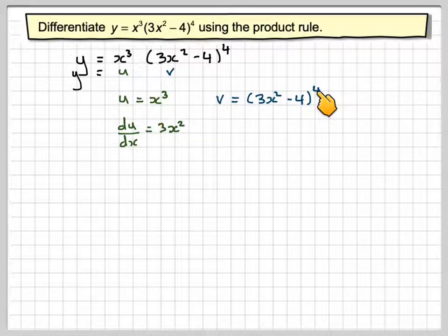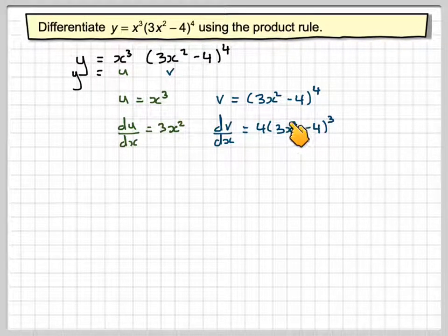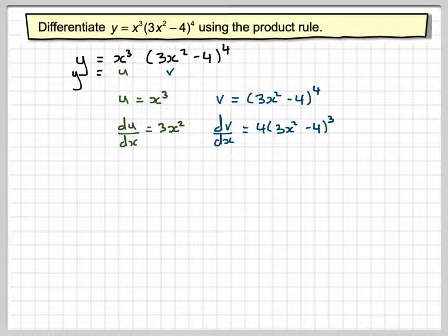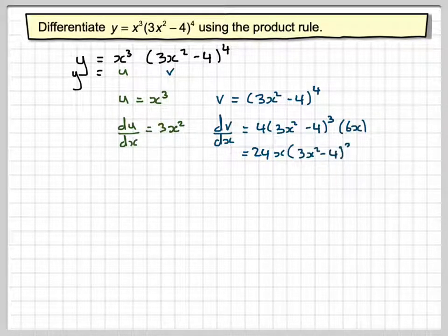Now you differentiate this using the chain rule. So it's going to be 4 times 3x squared minus 4 to the power of 3. Differentiate the bracket, you're going to get 6x. So that's going to be 24x, 4 times 6, 24x times 3x squared minus 4 to the power of 3.